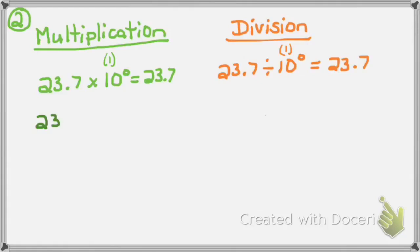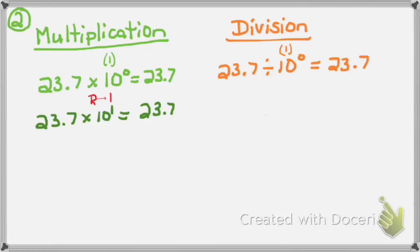What if I had the multiplication problem 23 and 7 tenths times 10 to the 1st power? I know 10 to the 1st power is greater than 1 — it's a 1 with one zero, which is 10, and that's greater than 1. Greater means I move my decimal to the right. My exponent is 1, so it moves one place to the right. I write down 23 and 7 tenths, and since there's already a decimal, I cross it out and move it one place to the right. So 23 and 7 tenths times 10 to the 1st equals 237.